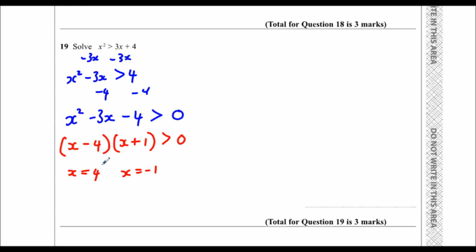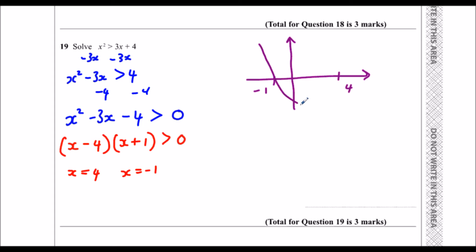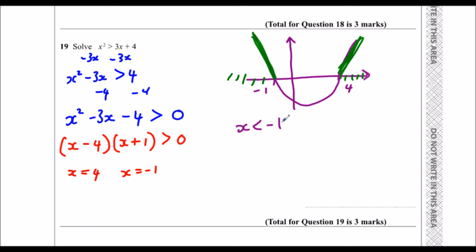So we're going to use these but we don't know what the signs are going to be yet. If I give you a little sketch here — it crosses the axes at minus 1 and 4, so we've got a quadratic which is shaped like this. And we want to know where it's bigger than 0 — so up here and up here are the bits where it's bigger than 0. So the x values there: we want x is less than minus 1 or x to be bigger than 4. And that's the answer: x is less than minus 1 or x is bigger than 4.